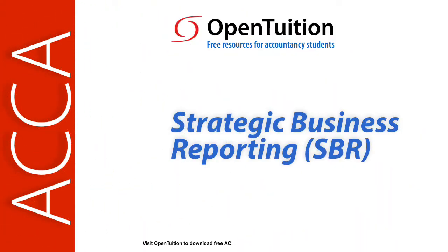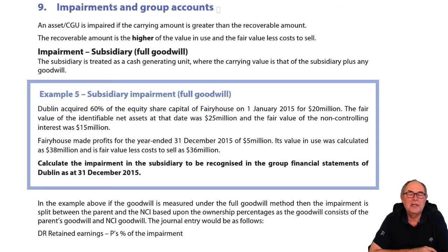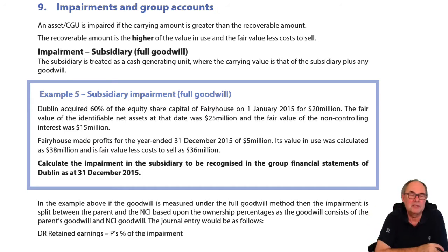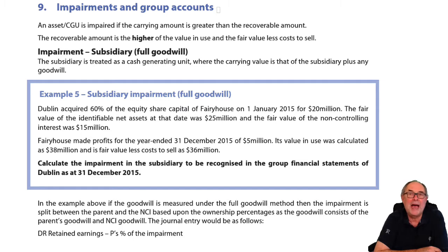This is a lecture from OpenTuition. To benefit from the lecture, you should download the free lecture notes from OpenTuition.com. Next is impairment in group accounts. If you remember impairment from financial reporting, you'll find this not too bad. If you've completely forgotten its existence, you may find it easier to listen to this after you've worked through impairment, which is later in our notes. There are a lot of concepts here and it'll be something you'll need to look back at a couple of times, so try not to get too angry with it at first.